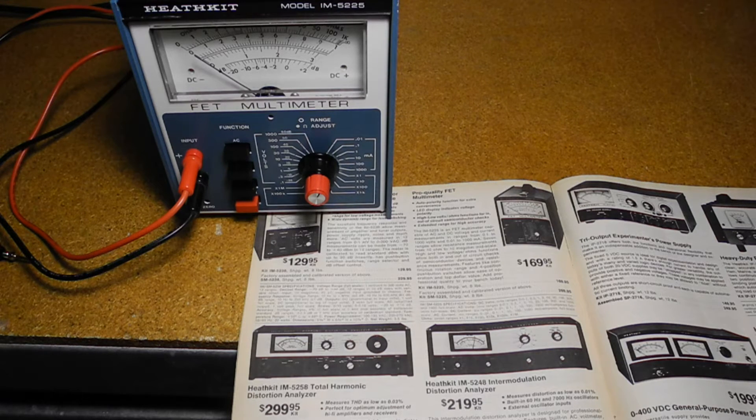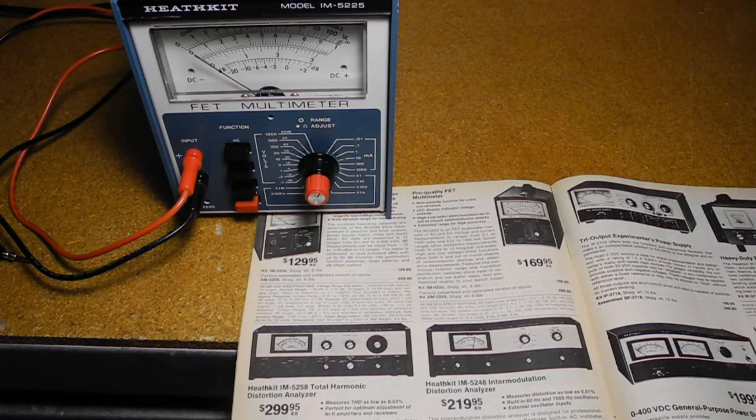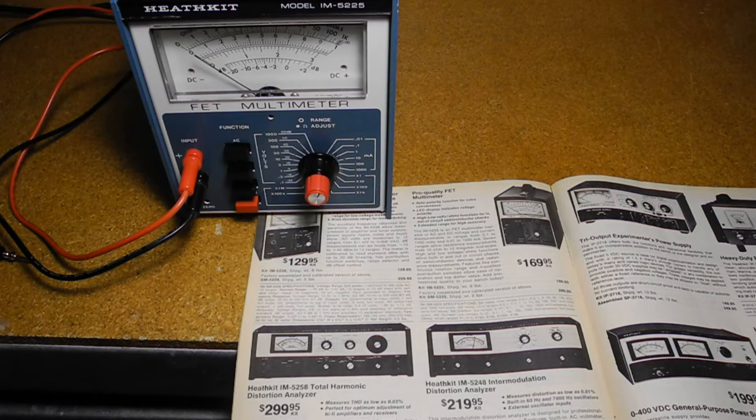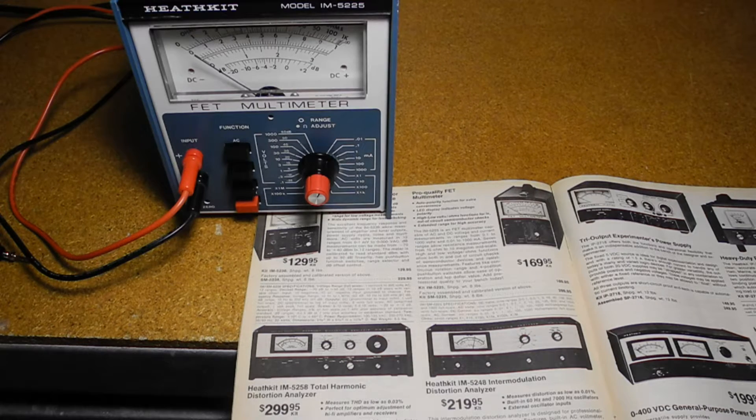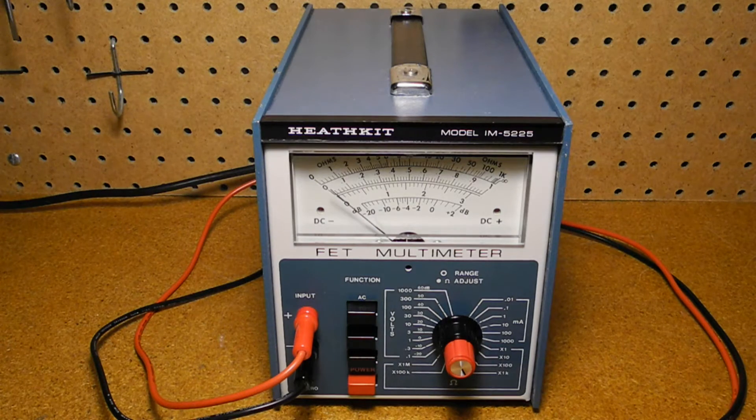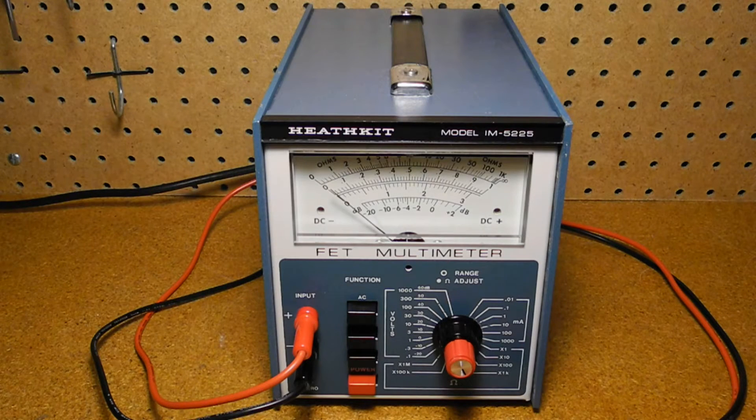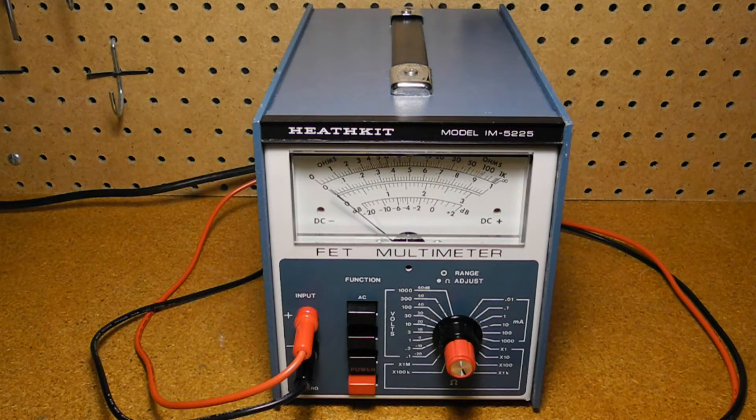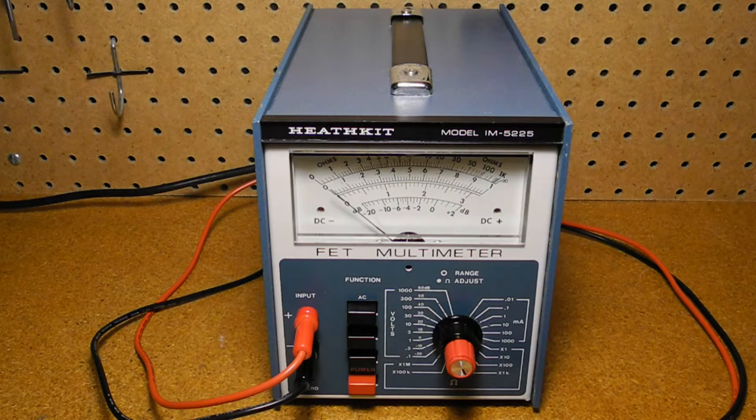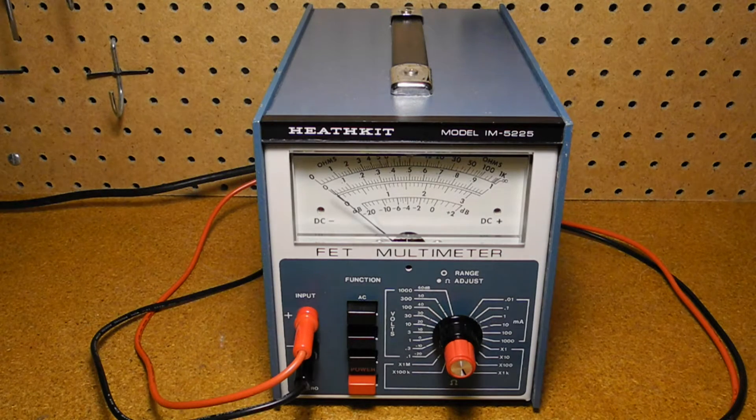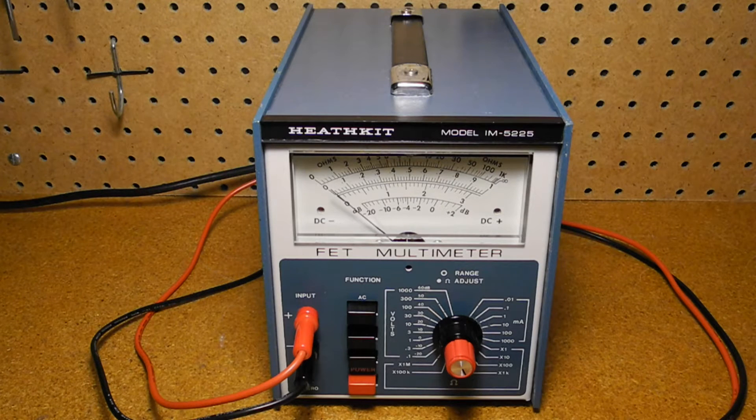It was sold as a kit that the user assembled. The SM5225 was a factory-assembled and calibrated version of the same meter, which typically sold for $100 more. The IM5225 can measure AC and DC voltage and current, as well as resistance. It's AC-line-powered with no need for batteries, unlike most VOMs and VTVMs, and is switch-selectable for 120 or 220 volts AC-line voltage.